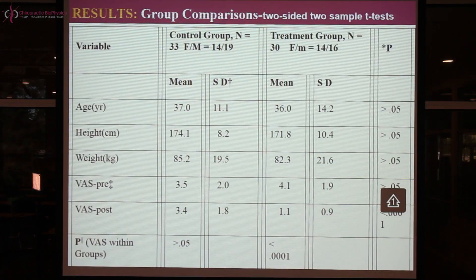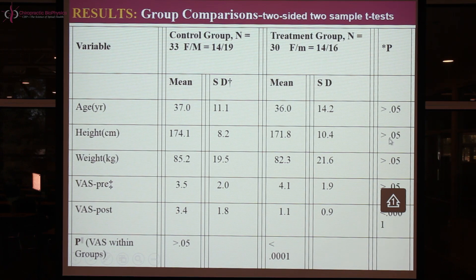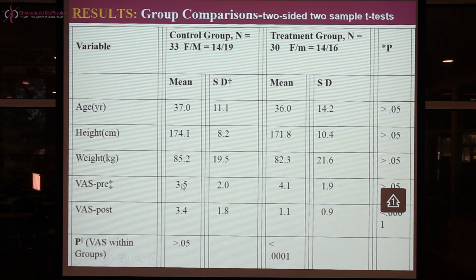Here are our group comparisons. The treatment group and control group were matched for age (37 vs. 36), height, weight, and initial pain — all with p-values greater than .05, confirming no significant differences. However, at post-treatment the control group had nearly the exact same pain level 8.5 months later, while the treatment group subjects were 75% better. This shows that chronic neck pain does not go away on its own; if you have chronic neck pain and do nothing, it will still be there eight months later.